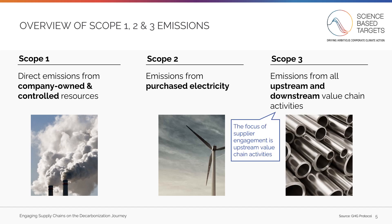Scope 3, which is the focus of this guidance, covers all indirect emissions from a company's upstream and downstream value chain activities. For example, upstream value chain activities would include emissions from production of purchased supplies, transportation of those supplies, or employee commuting. Examples of end use would include emissions from customers driving a vehicle your company produced, or the emissions from transportation of a completed product. Supplier engagement focuses on addressing your Scope 3 upstream value chain activities.